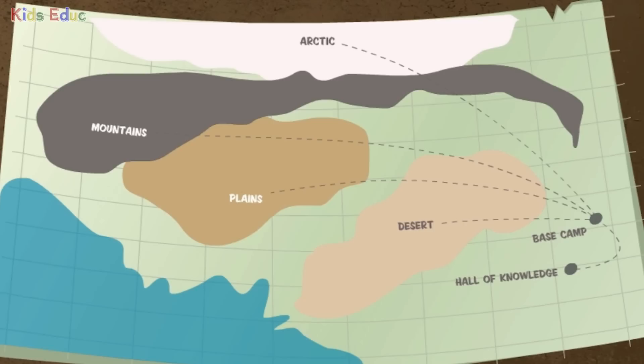Welcome to the map of your quest. Your goal is to discover the fossils in the Valley of Kundar. This valley holds the climates of the desert, the Arctic, the plains, and the mountains. Before you begin digging up your finds, you must learn about fossils in the Hall of Knowledge and then learn about your gear and base camp. Each area will open to you as you complete your tasks. Let's go!